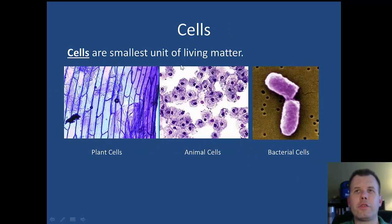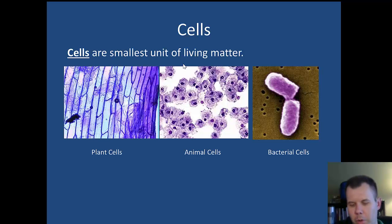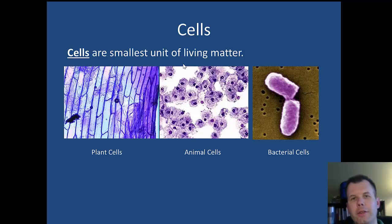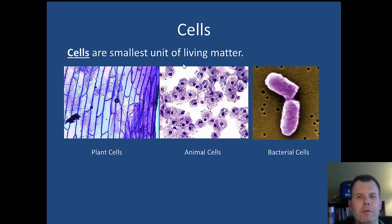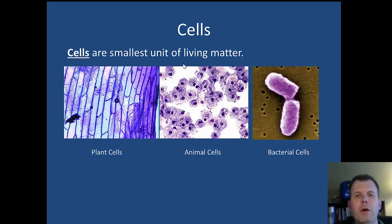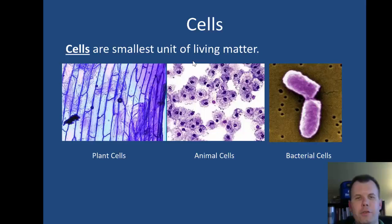Cells are the smallest units of living matter. Jill has done a wonderful job talking about what atoms are, what matter is, and what organic molecules are. Now we're putting them all together and forming what is called a cell. A cell is the smallest living unit. We'll discuss more about what makes something alive versus not alive — we alluded to that in chapter one, and we'll talk more specifically about why a cell is alive and why a virus isn't when we get to chapter 20. For now, just think of the cell as the smallest living unit.